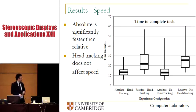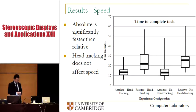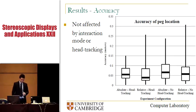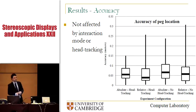On the other hand, if you compare the first and third plots, and then the second and fourth — comparing head tracking with no head tracking, both in absolute and relative modes — you will see that there is no significant difference in the mean times. Therefore, head tracking does not have an effect on the speed of the participants. Moving on to accuracy, this box plot illustrates the lack of differences between the mean accuracy for all four configurations. All configurations had a mean accuracy between six and seven centimeters, and none of the values were significantly different. Therefore, accuracy was not affected by interaction mode or by the use of head tracking.